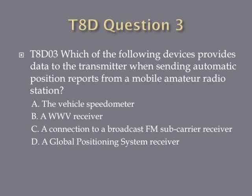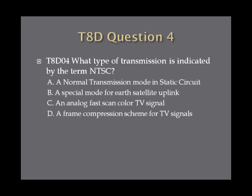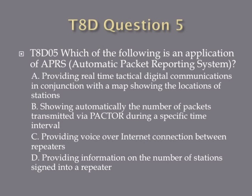Question 3: Which of the following devices provides data to the transmitter when sending automatic position reports from a mobile amateur radio station? A. The Vehicle Speedometer. B. A WWV Receiver. C. A Connection to a Broadcast FM Subcarrier Receiver. Or D. A Global Positioning System Receiver. Question 4: What type of transmission is indicated by the term NTSC? A. A Normal Transmission Mode in Static Circuit. B. A Special Mode for Earth Station Uplink. C. An Analog Fast Scan Color TV Signal. Or D. A Frame Compression Scheme for TV Signals. Question 5: Which of the following is an application of APRS? A. Providing Real-Time Tactical Digital Communications in Conjunction with a Map Showing the Locations of Stations. B. Showing Automatically the Number of Packets Transmitted via Packet during a Specific Time Interval. C. Providing Voice Over Internet Connection between Repeaters. D. Providing Information on the Number of Stations Signed into a Repeater.